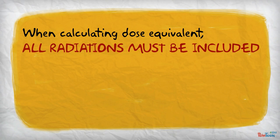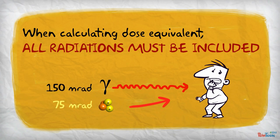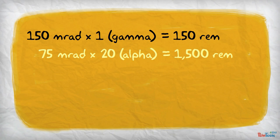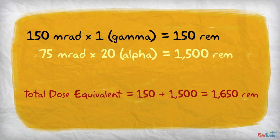When calculating dose equivalent, all radiations must be included. For example, if there is a gamma radiation and an alpha radiation, we must consider the dose equivalent for each in the total dose equivalent. To calculate for this example, we take each absorbed dose and multiply by the RBE to get the dose equivalent for that radiation. Then, we add these values to get the total dose equivalent. In this case, 1650 rem, which is equal to 16.5 Sieverts.